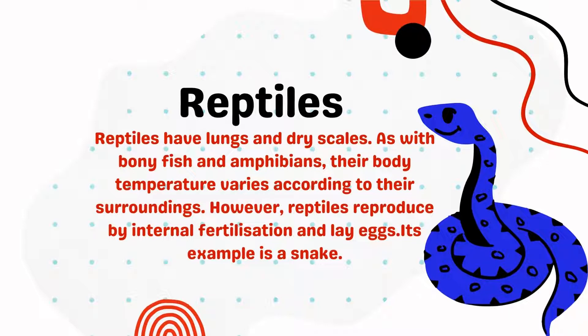Reptiles have lungs and dry scales. As with bony fish and amphibians, their body temperature varies according to their surroundings. However, reptiles reproduce by internal fertilization and lay eggs. An example is a snake.